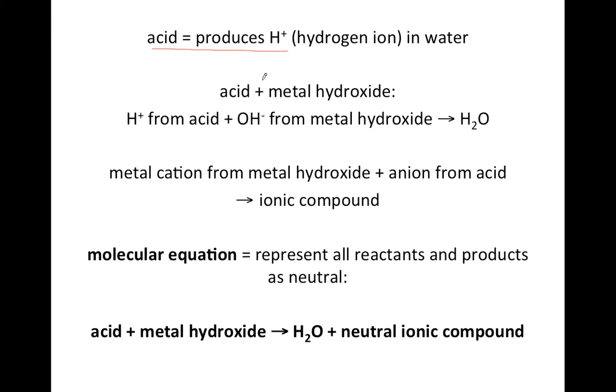An acid produces H+ or hydrogen ions in water. When you mix an acid and a metal hydroxide, two things happen. The H+ from the acid sticks to the OH- from the metal hydroxide and gives you water as a product. At the same time, the metal cation from the metal hydroxide sticks to the anion from the acid and gives you an ionic compound.